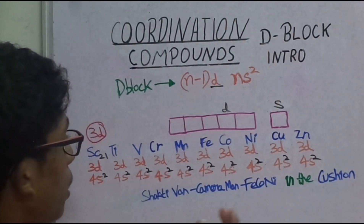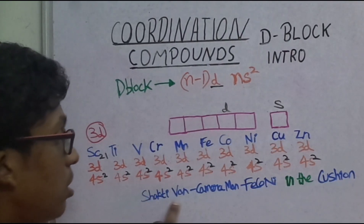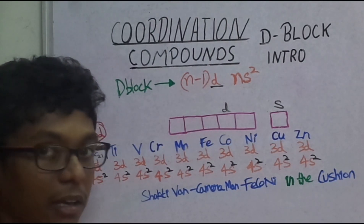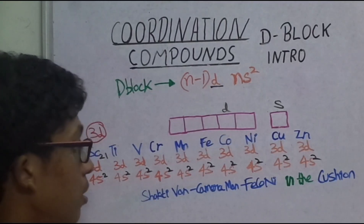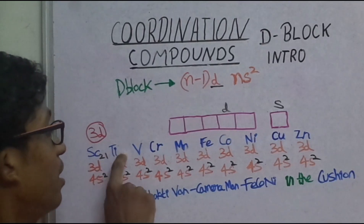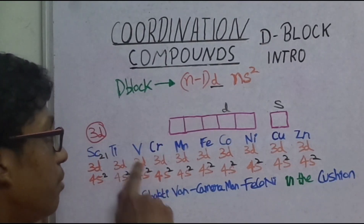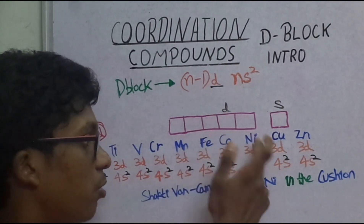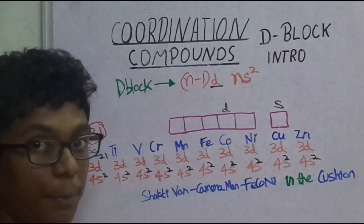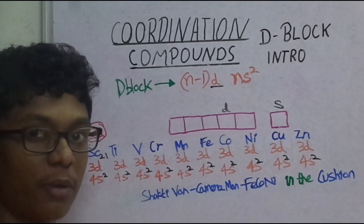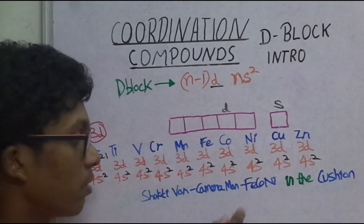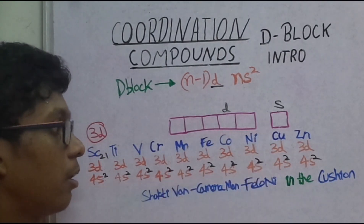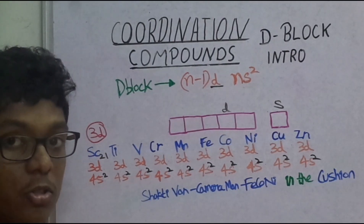If you want to remember the 3D series elements, you can use a mnemonic trick — a rhyme. For example: Sc, Ti (Scandium, Titanium), Van (Vanadium), Camera (Chromium), Man (Manganese), Feconi (Iron, Cobalt, Nickel), then Copper and Zinc. This mnemonic helps you recall the sequence easily.